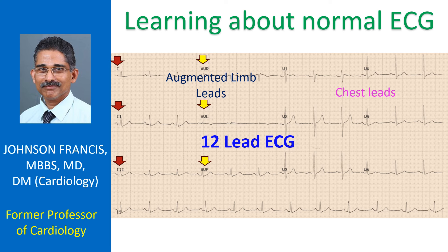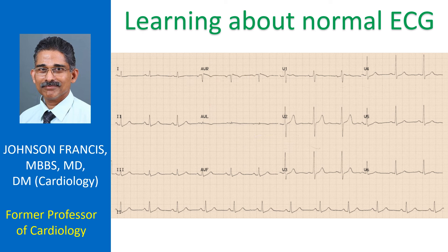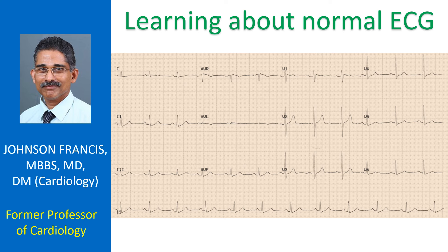All 12 leads have recorded ECG of 3 cardiac complexes in this tracing. There is a long lead 2 recording at the bottom of the tracing, which is a rhythm strip enabling better assessment of the cardiac rhythm. 12 leads can be acquired simultaneously and printed sequentially as in a 12-channel machine, or can be acquired sequentially as in a single-channel ECG machine.